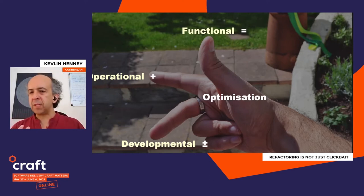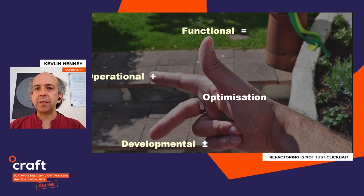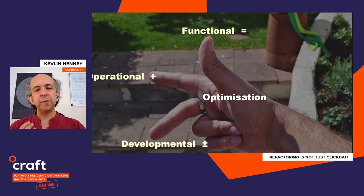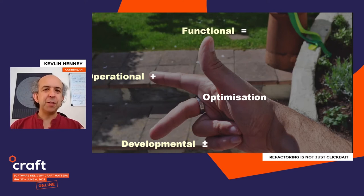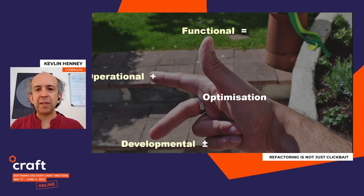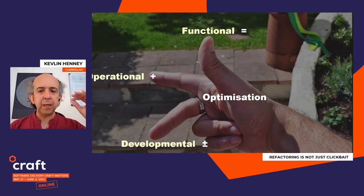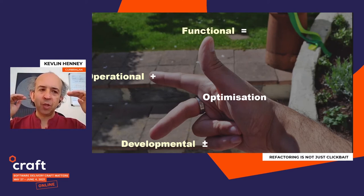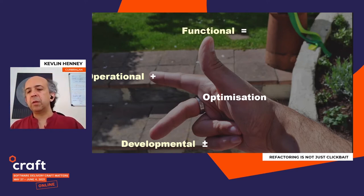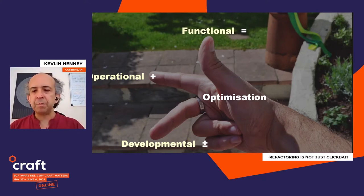What about optimization? Optimization has a particularly interesting character here. It preserves the functionality — it preserves the semantics. That's an important feature. It's no good saying 'this code runs 10 times faster' if it's wrong. Having your bugs run fast is not what we're after. The goal is to keep the functionality fixed and then improve some aspects of the operational behavior. What happens to the developmental quality? Well, maybe it gets better, maybe it gets worse, maybe it stays the same.